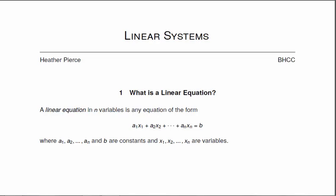Well, when you think linear, you may think back to geometry or algebra and think line. And that's not wrong. In general, a linear equation in n variables is any equation of the form a₁x₁ + a₂x₂ + a₃x₃ all the way up to aₙxₙ = b, where a₁ through aₙ and b are all constants and x₁ through xₙ are variables.